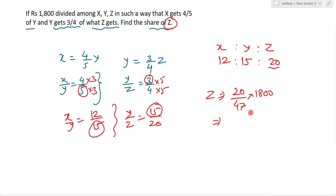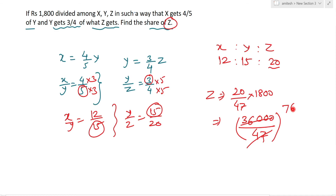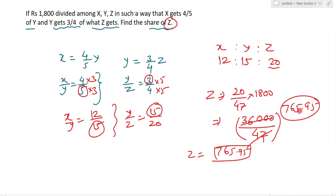तो Z का share = 20/47 × 1800 = 36,000 / 47। 47 से 36,000 को divide करोगे तो value आएगी 765.95। तो Z को मिलने वाला हिस्सा 765.95 है। यहाँ पर shortcut use किया। आप easily divide करके confirm कर सकते हो। Thanks for watching the video।